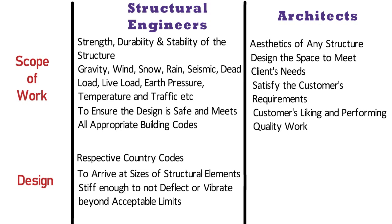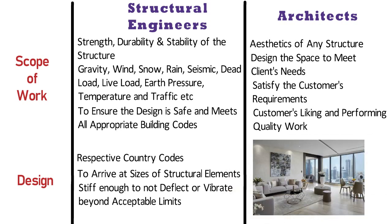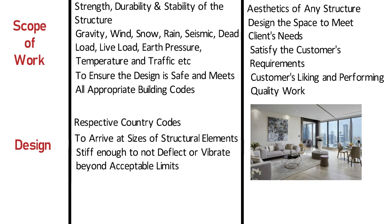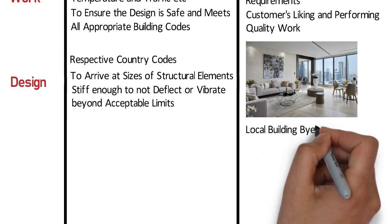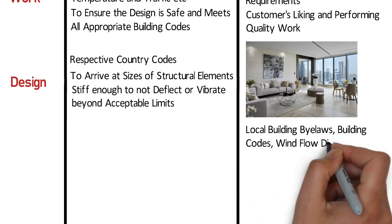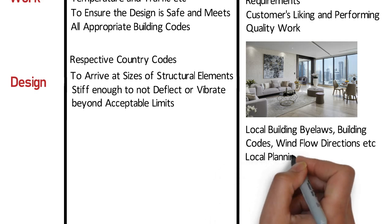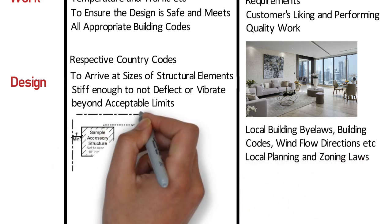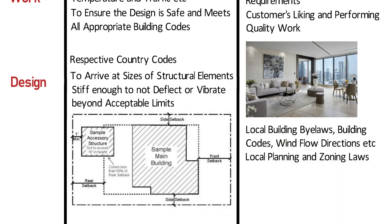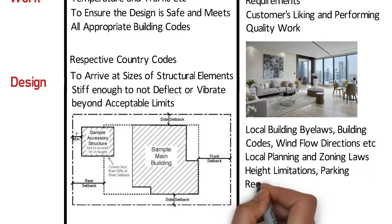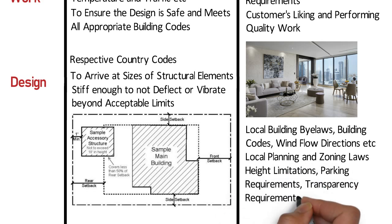On the other hand, while planning the interiors of any building or when planning for a municipal authority, the architect needs to know some local building bylaws, building codes and wind flow directions. The architect also needs to comply with local planning and zoning laws such as required setbacks, height limitations, parking requirements, and transparency requirements like windows and land use.